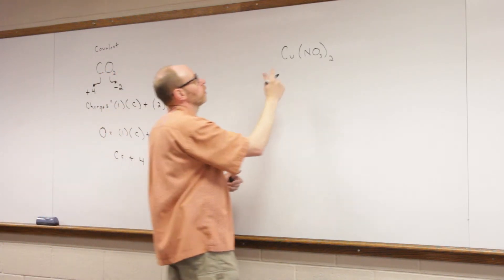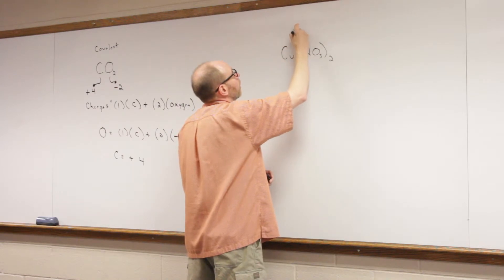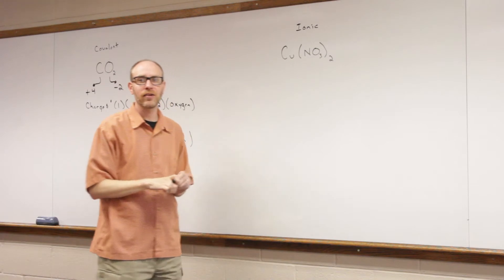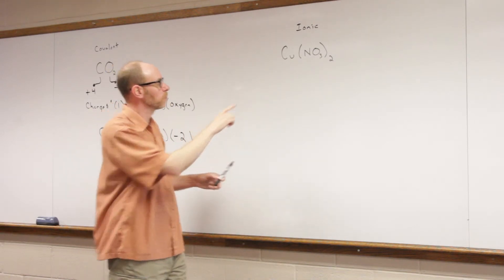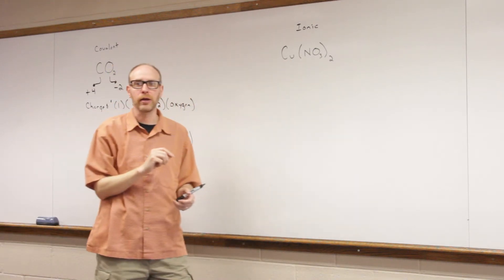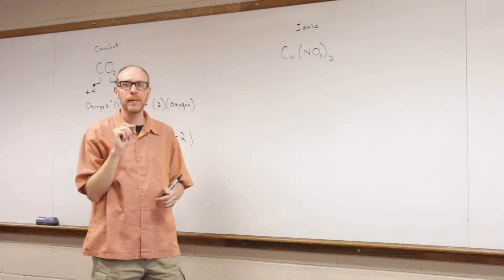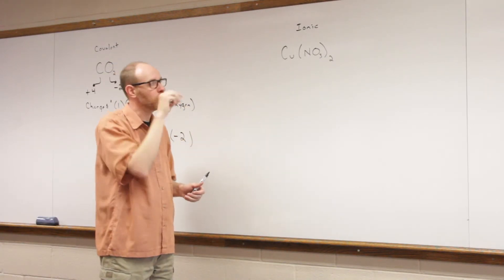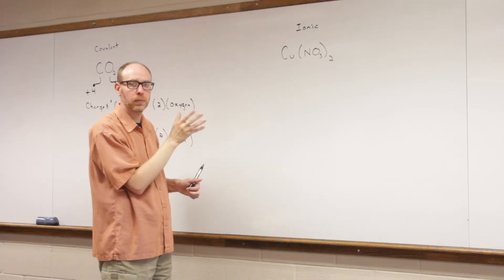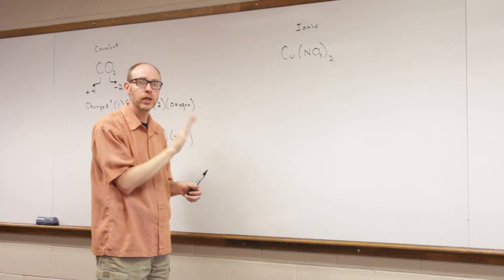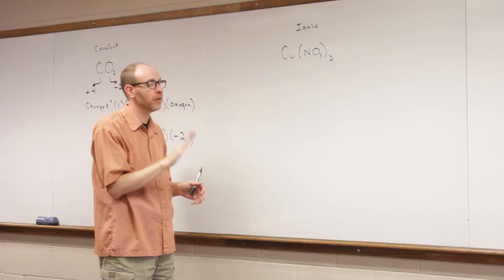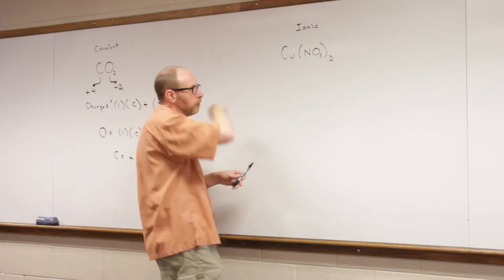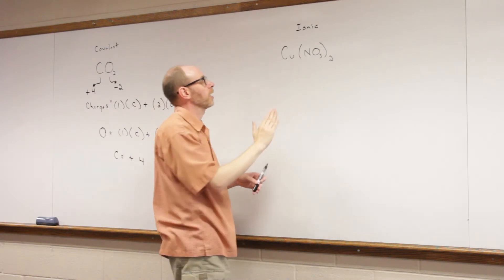Now we're going to move to an ionic compound. I know it's ionic. I know it's ionic because there is a metal in it, both a metal and a polyatomic ion. Those should be two screaming alarms for you to say that's an ionic compound. And if you aren't able to choose or distinguish between ionic and covalent, you need to make sure you get that down now. It's a very, very important skill to have in chemistry.